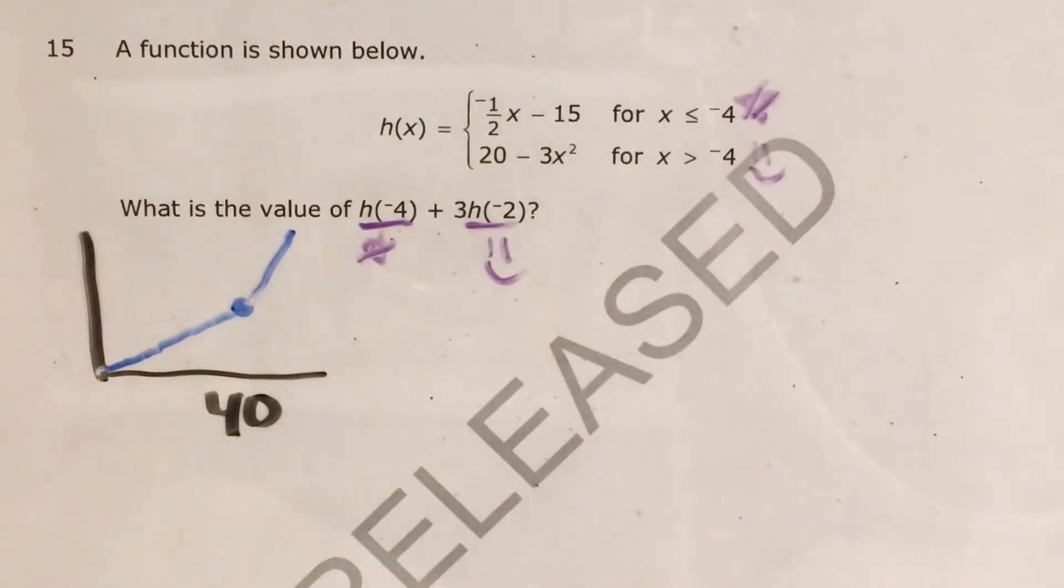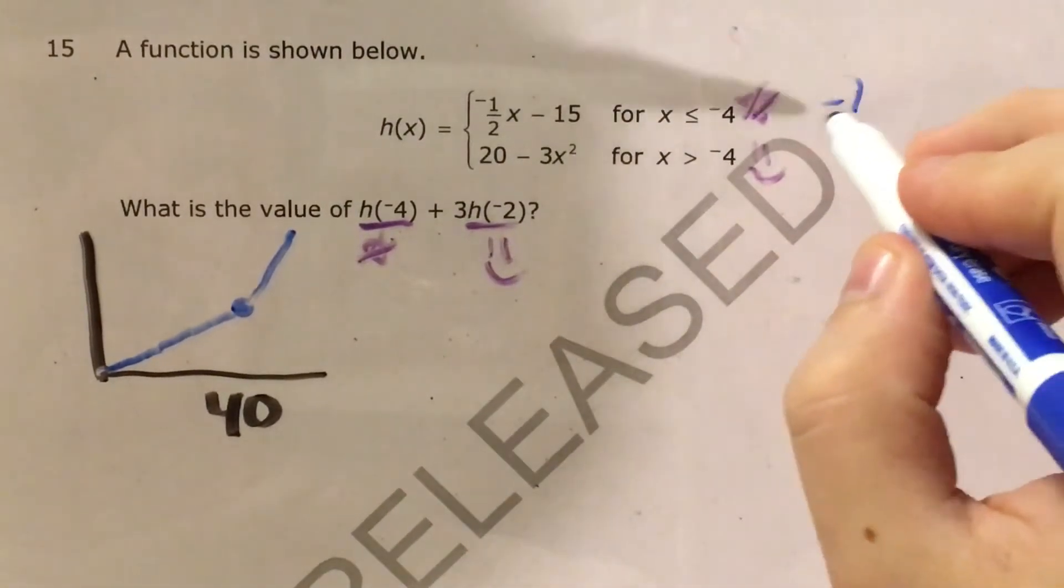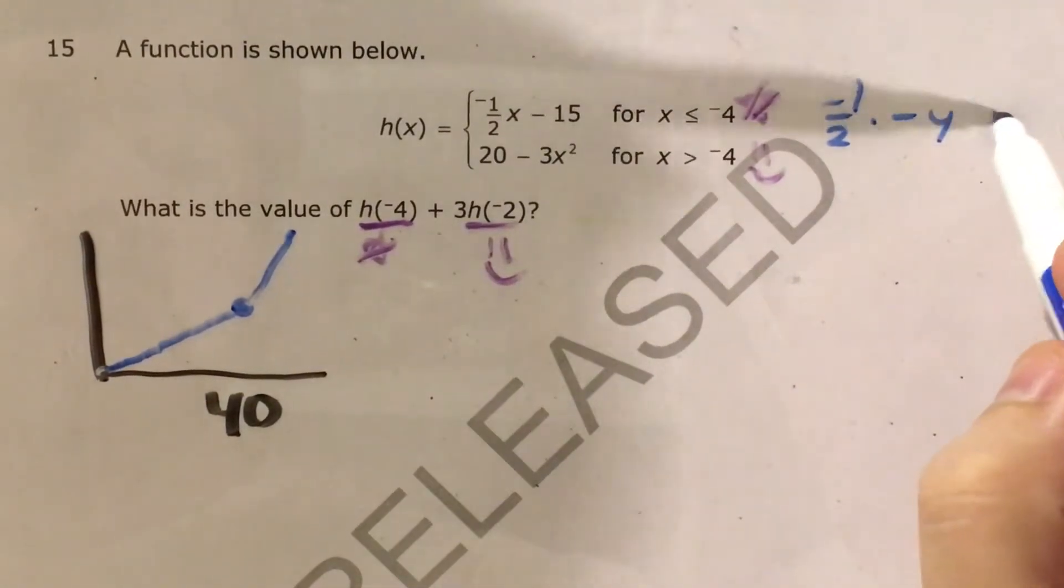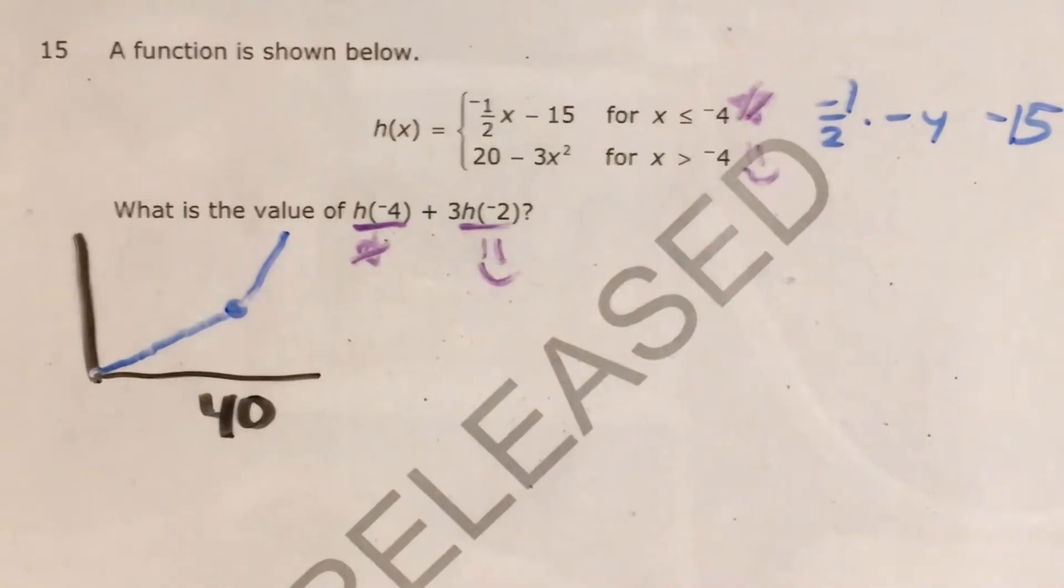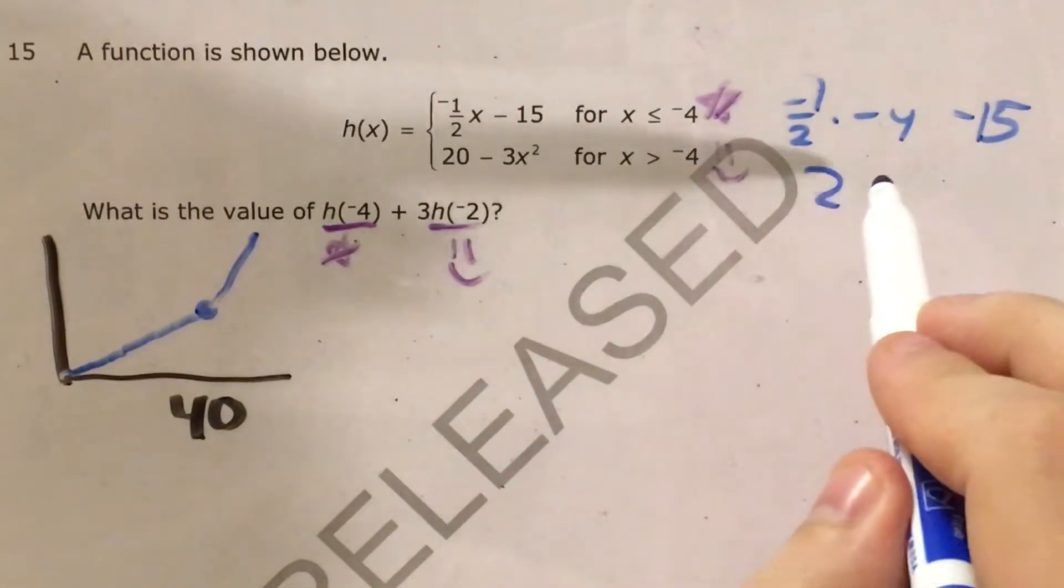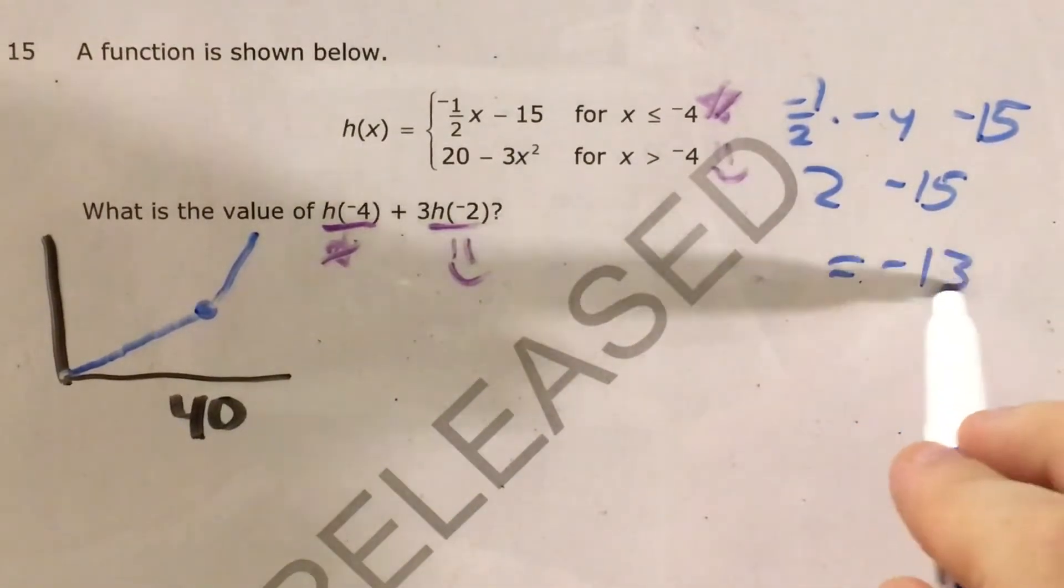So let's go ahead and actually start to write out and figure each of these out. If I plug negative 4 in here, that's negative 1 half times negative 4 minus 15. Which ends up being negative 1 half times negative 4 is positive 2 minus 15 is going to give me negative 13.